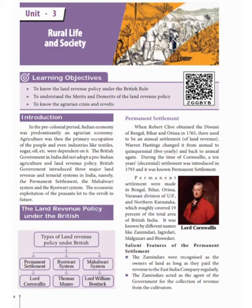This ten-year land revenue system, introduced in 1793, is called the permanent settlement. Under this, Bengal, Bihar, Orissa, Varanasi, and all of northern Karnataka were covered, roughly 90% of the total area of British India. It was known by different names like Zamindari, Zahirdari, Mughalzari, and Biswedari — referring to the people who governed the land and paid tax to the government.